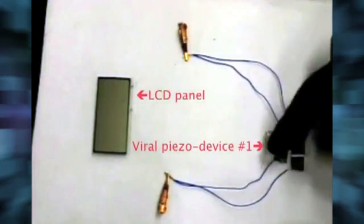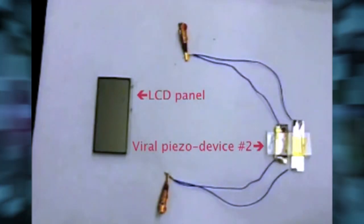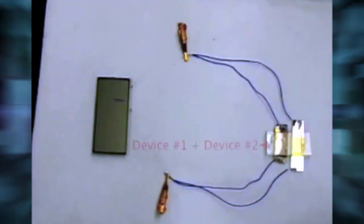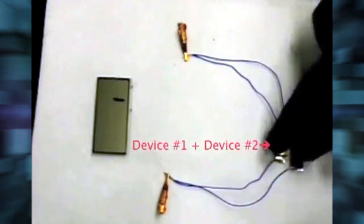This film was then sandwiched between two gold-plated electrodes, which were connected by wires to a liquid crystal display. When pressure is applied to the generator, it produces up to 6 nA of current and 400 millivolts of potential. That's enough current to flash the number one on the display, and about a quarter the voltage of a triple-A battery.